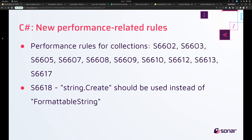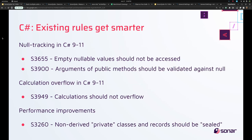Let's start with C#. We have new performance-related rules for collections and one new rule to encourage the use of string.create. Also for C#, some existing rules get smarter — we added support for C# 9-11 for null tracking and calculation overflow detection. We've also added general performance improvements for rule S3260.